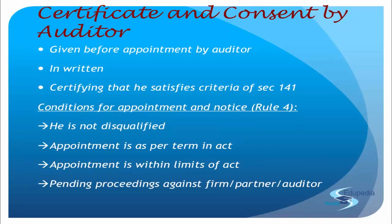For example, if Mr. A is appointed as auditor, you'll have to prepare a list of proceedings of Mr. A. If firm ABC is appointed and Mr. C only has some proceedings against him, then you will have to specify even that. So either the proceedings are related to the individual appointed, or in the case of a firm, if any one partner also has proceedings — it need not mandatorily be in the name of the firm, it can be a proceeding in the name of any particular partner. You'll prepare the list of all pending proceedings with respect to professional matters of conduct, disclose it in the certificate, and attest that it is true and correct.